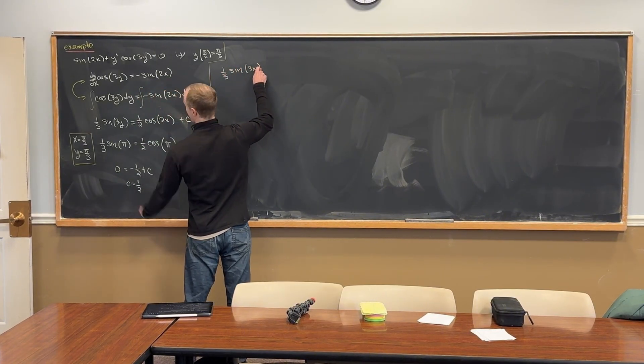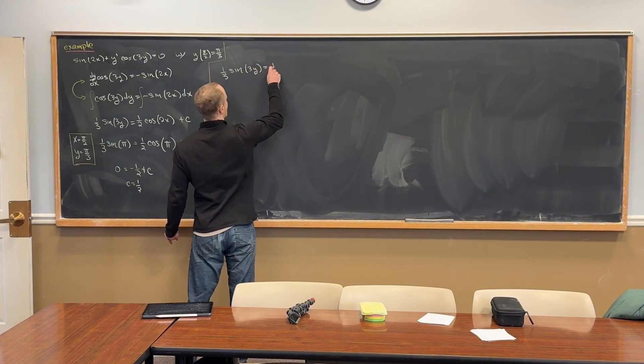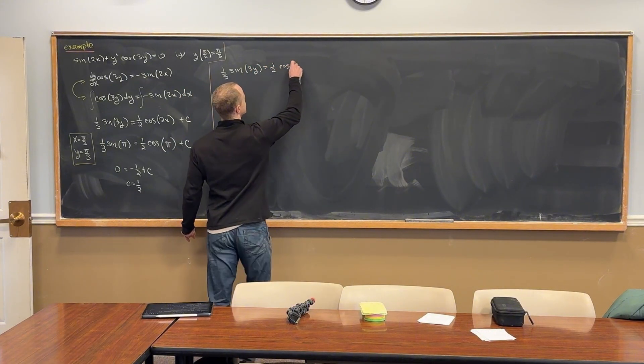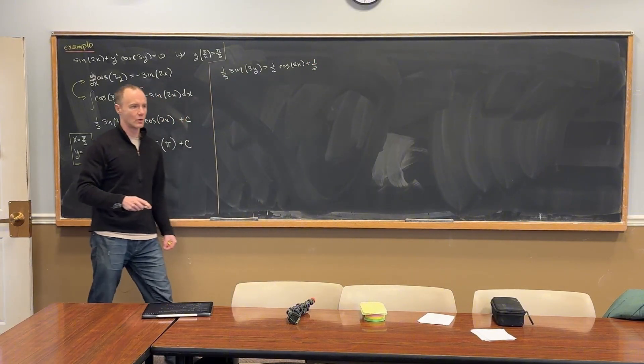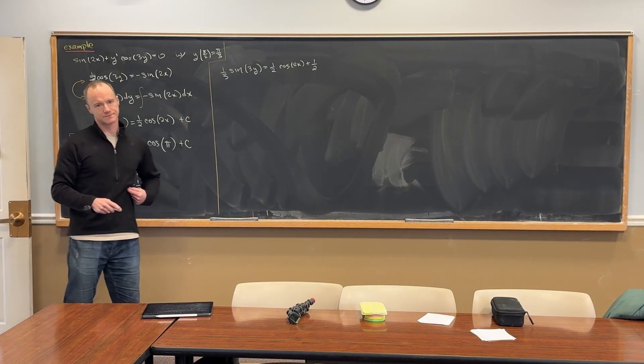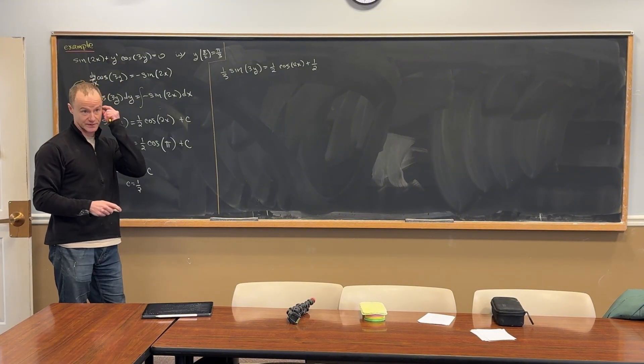Sine of 3y equals a half times cosine of 2x plus a half. Do we stop there, or do we solve for y?